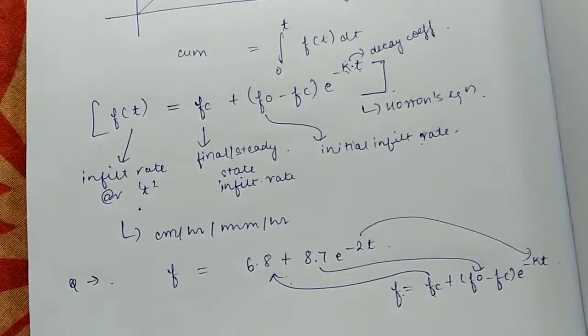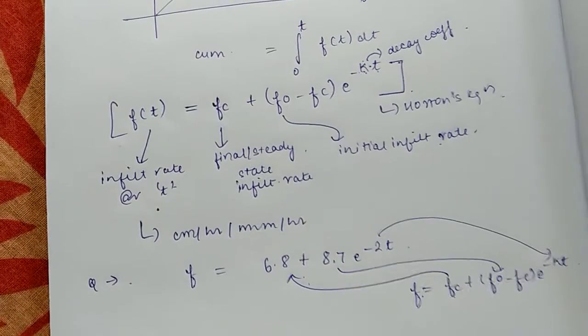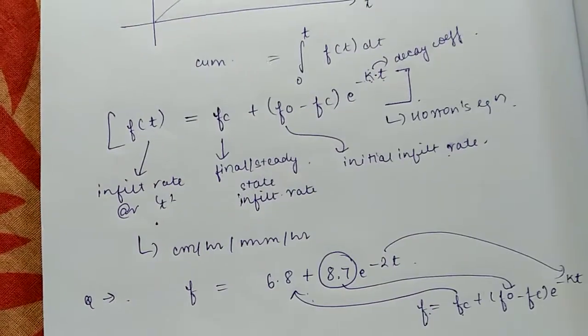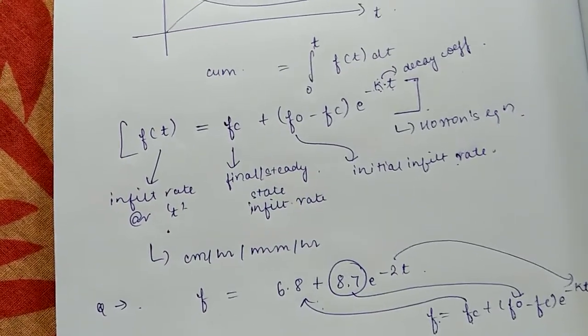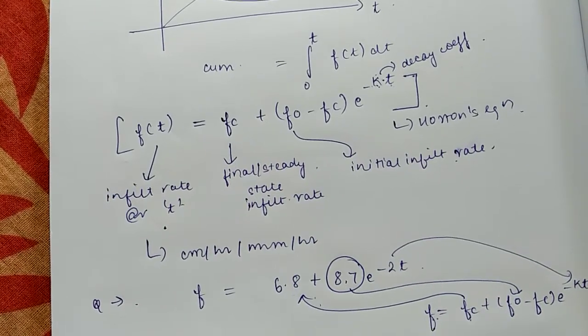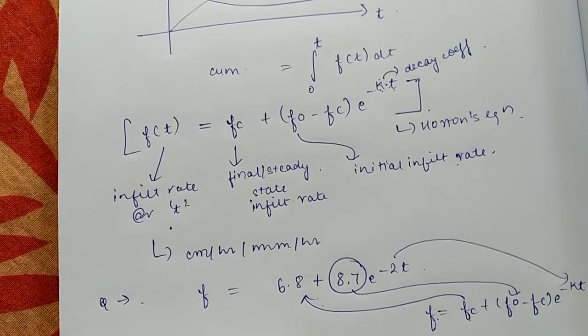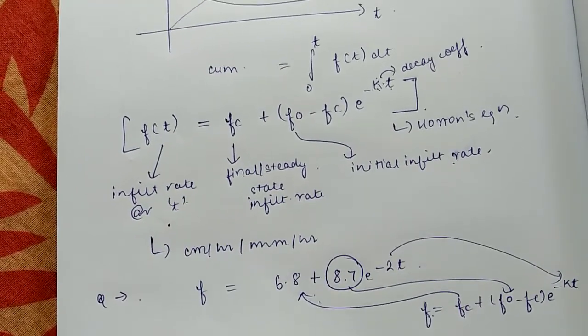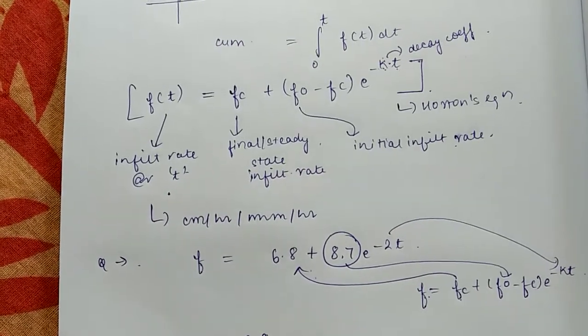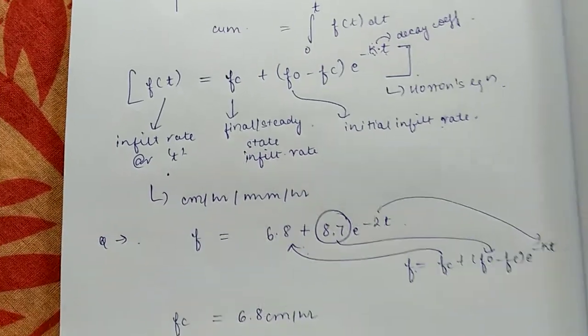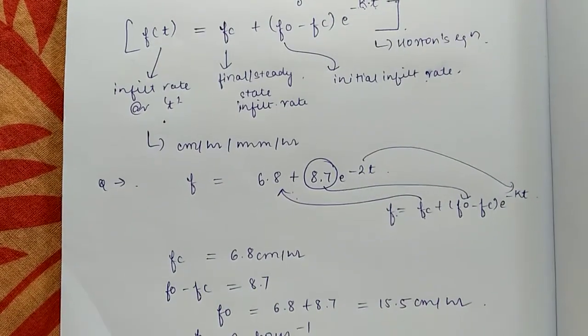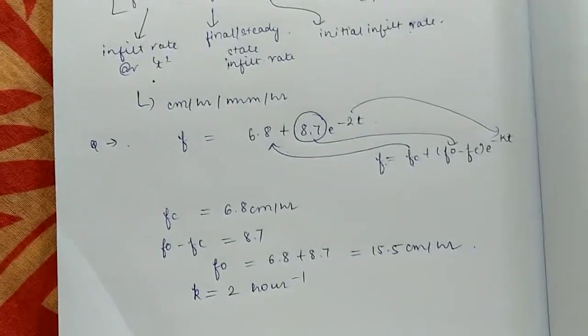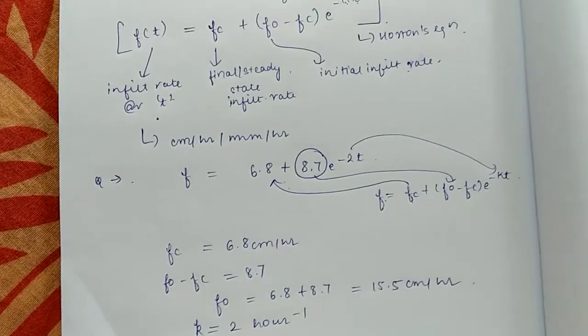If I compare, I see that fc value is 6.8. f0 minus fc value is written here as 8.7, so I can find f0 value, which is 15.5. Obviously the unit will be predefined, say cm per hour in this case. k value is 2 per hour. This is how we can find the parameters of the equation by comparing Horton's equation and getting the parameters.